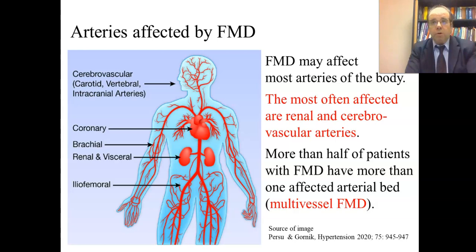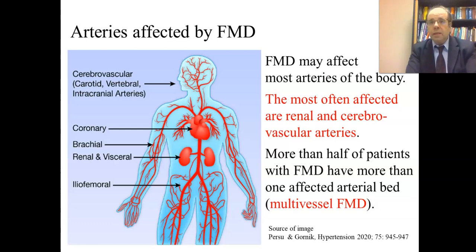While most physicians have learned about FMD as a rare cause of narrowing of renal arteries, FMD may in fact affect most arteries of the body. The most often affected are renal and cerebrovascular arteries, but FMD of brachial, visceral, and iliofemoral arteries also exists. Importantly, more than half of patients with FMD have more than one affected arterial bed — this is called multivessel FMD, which is distinct from multifocal FMD.